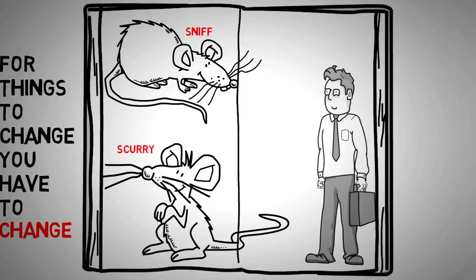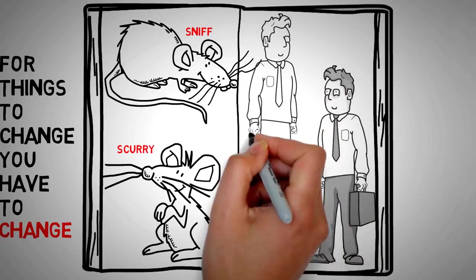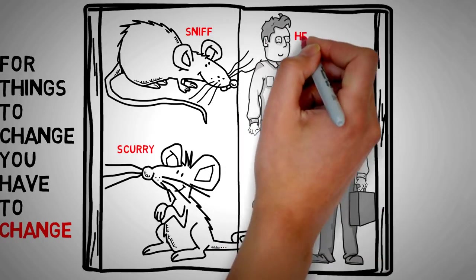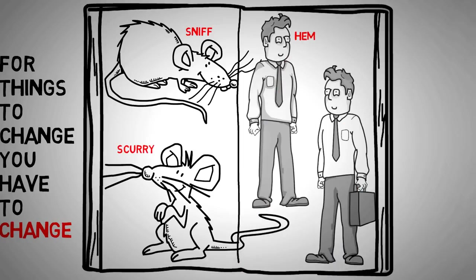Hem likes to stay in safe, familiar territory. Haw is slow to adapt to change but is open-minded. Sniff and Scurry go out and seek new cheese every day.